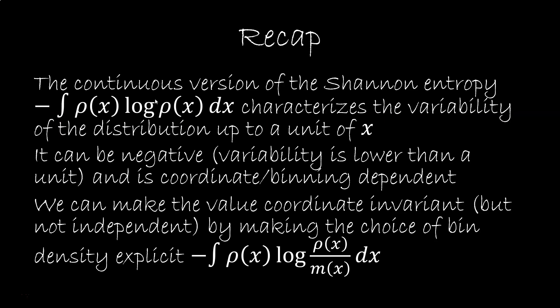To recap, the continuous version of the Shannon entropy characterizes the variability of the elements within a distribution up to a unit of x. It can be negative because the variability can be lower than the unit, and it is not coordinate independent, depends on the choice of unit. We can make the value coordinate invariant by making the choice of bin density explicit using the KL divergence, but this is not truly coordinate independent because the only thing we did was to make explicit the choice of binning, which is an arbitrary choice that, in the end, corresponds to a choice of unit. And this last part plays an important role in physics.